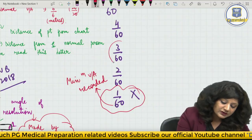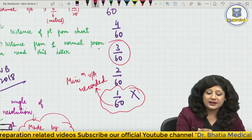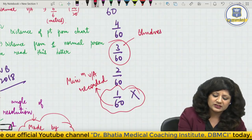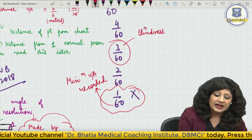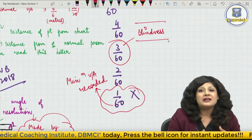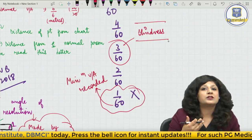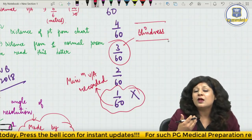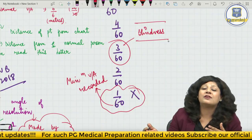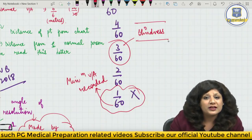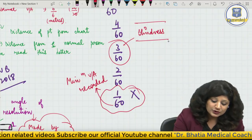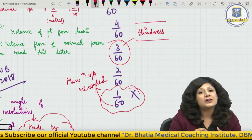Another important point: when visual acuity is less than 3/60, it is called blindness. This is the WHO definition, which India has also now accepted, effective 24th April 2017. Previously India's definition was different — less than 6/60 — but now both use less than 3/60 as the definition of blindness.